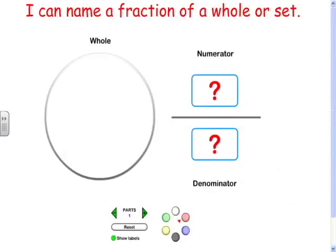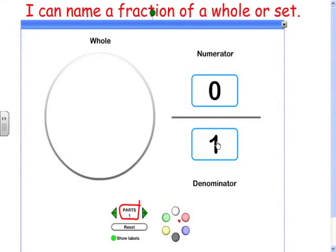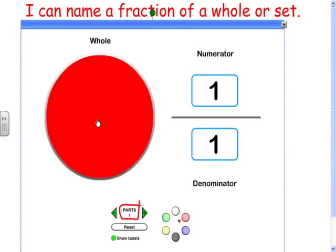Take a look at this. So these are fractions of a whole. So here's the whole. If we, down here at the bottom, it says parts. So right now it has one part, and zero out of one part is shaded. If I tap one of the colors, now one part is shaded out of one piece, so that's one whole.